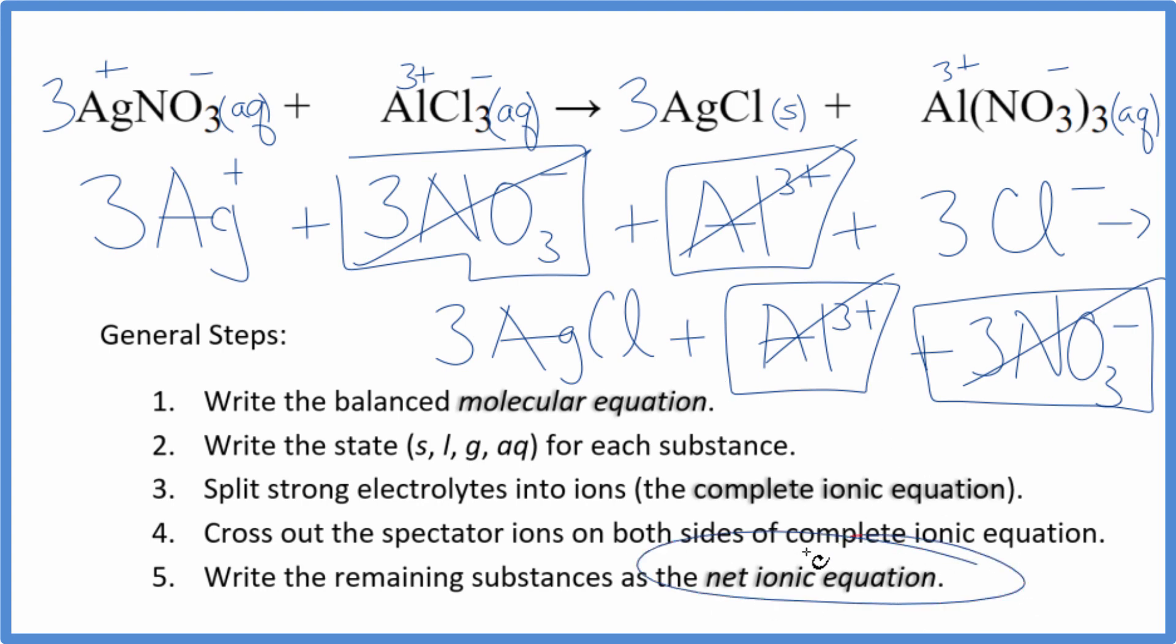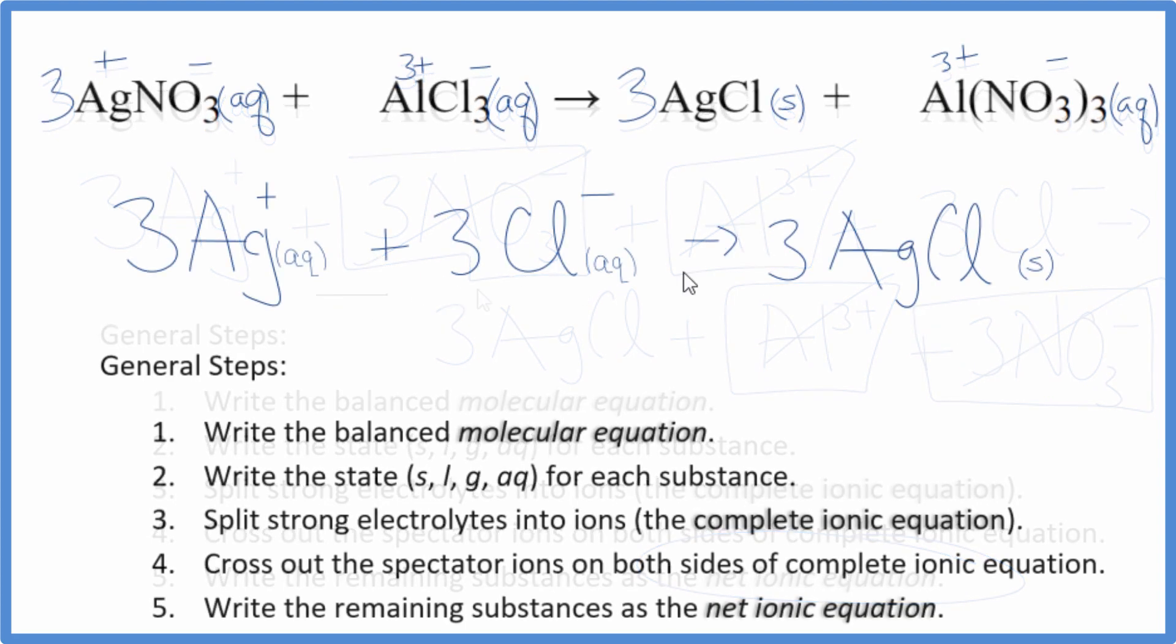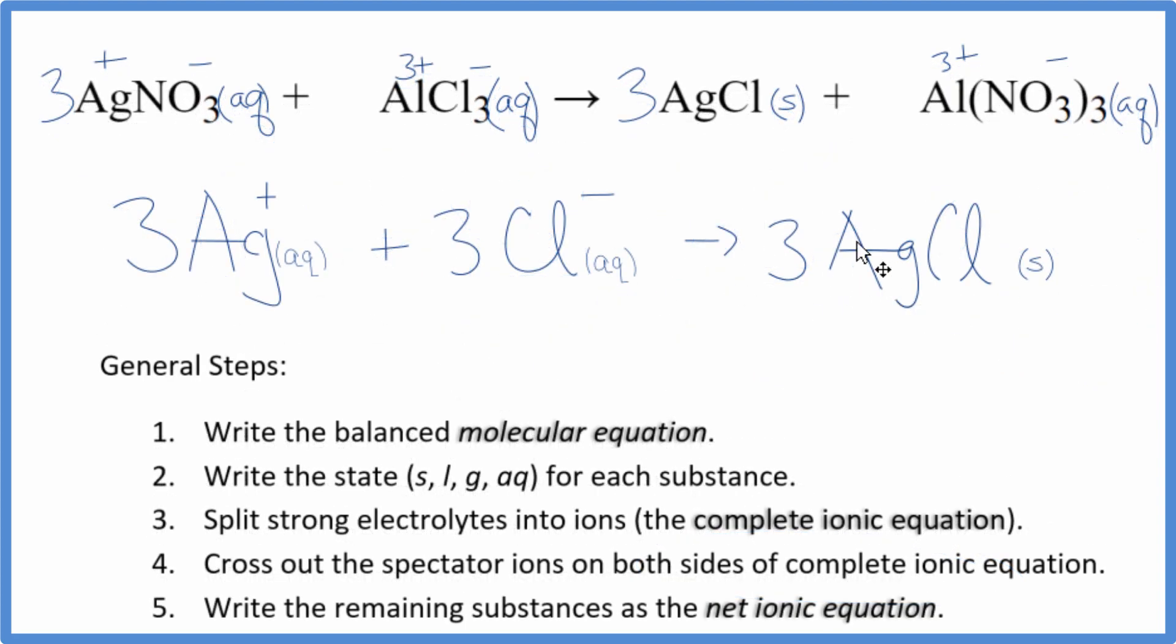What's left, that's the net ionic equation for AgNO3 plus AlCl3. Let me clean this up and write the states in. We'll do one more thing and we'll have our net ionic equation. Since we have a three in front of each compound, we can just reduce that down to one. So let's just get rid of that. And then we don't write the one in by convention.